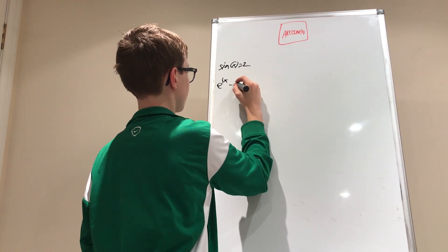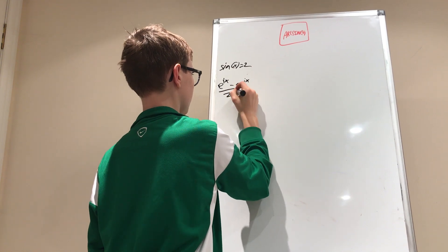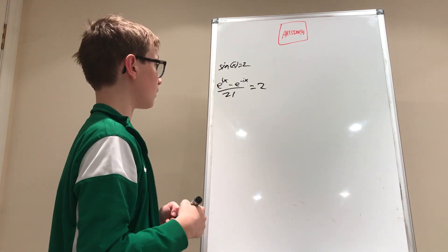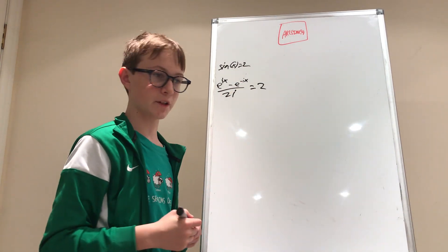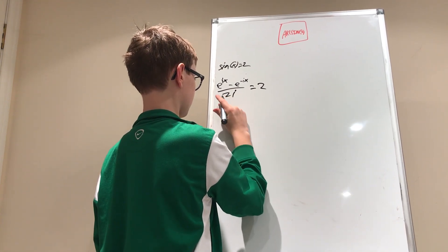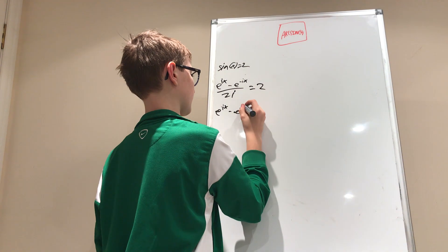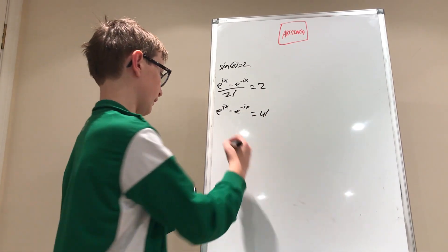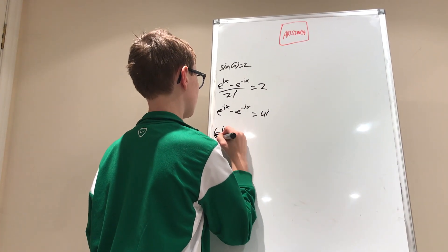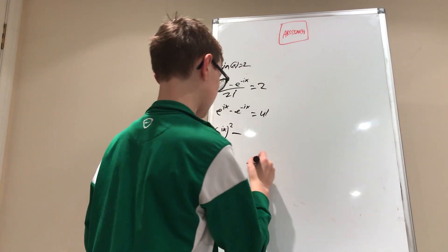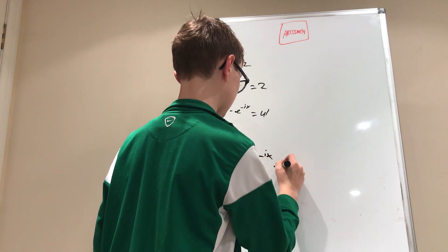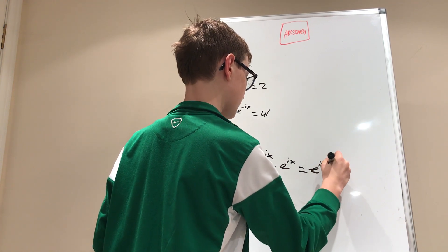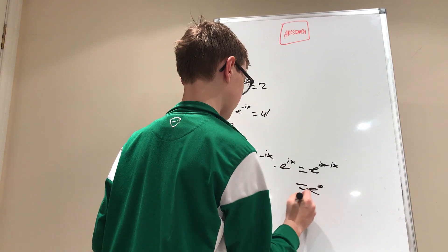Now let's plug in our equation. We have (e^(ix) − e^(−ix)) / 2i = 2. Multiplying both sides by 2i gives e^(ix) − e^(−ix) = 4i. Now multiplying both sides by e^(ix), we get e^(2ix) − e^(ix)·e^(−ix) = 4i·e^(ix). Since e^(ix)·e^(−ix) = e^0 = 1, we have e^(2ix) − 1 = 4i·e^(ix).